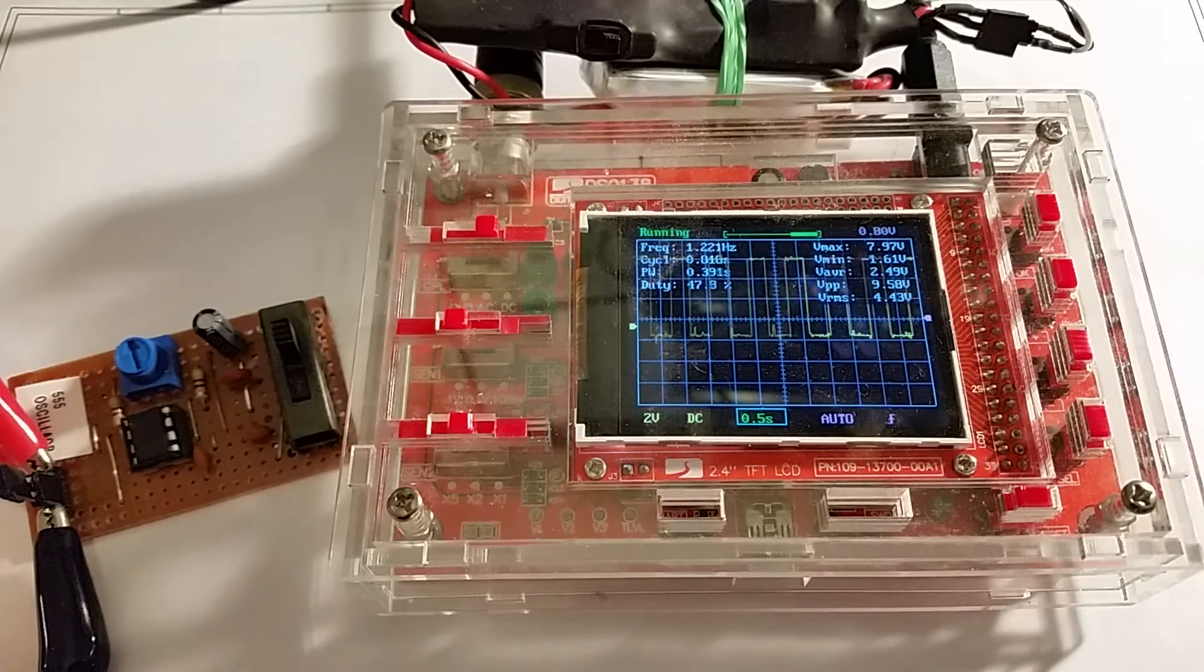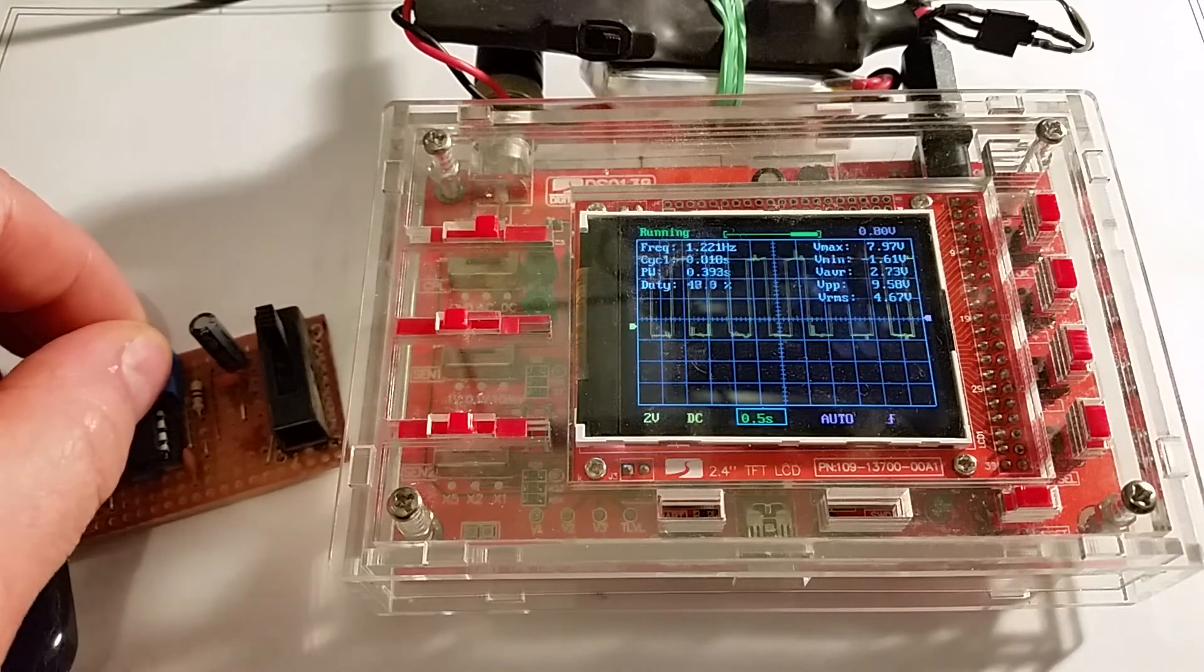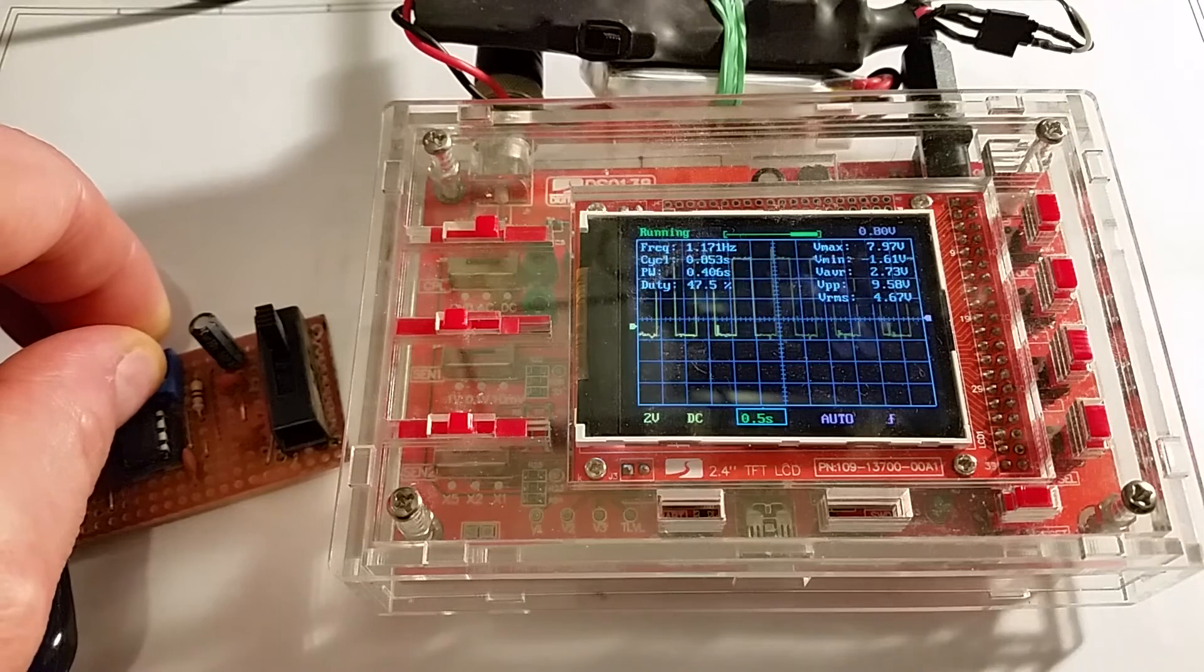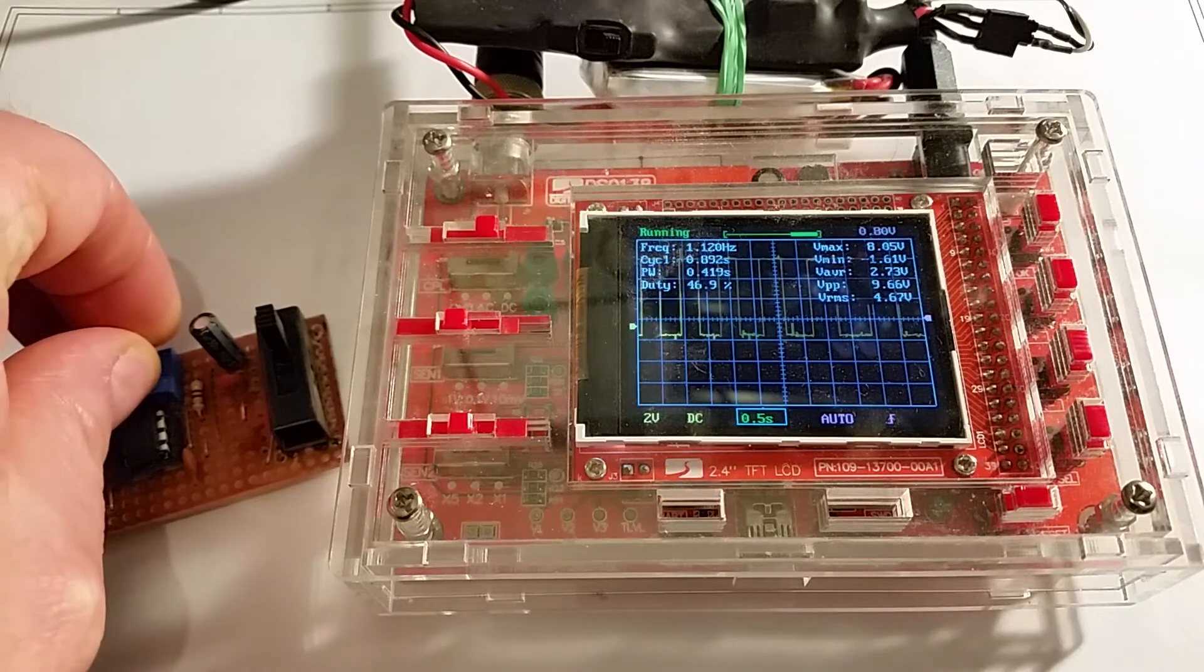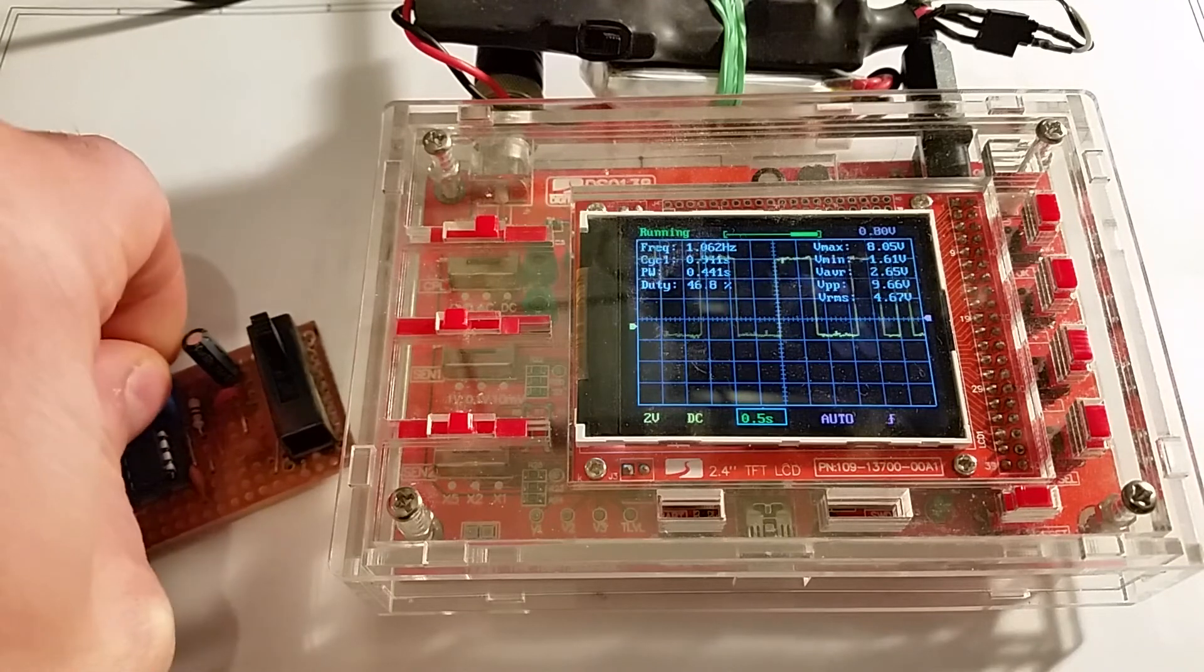So I've got the circuit connected up to my little oscilloscope and it's creating a frequency. So I can adjust the frequency by adjusting the potentiometer. So it's making the frequency higher and lower.